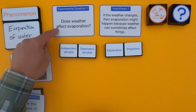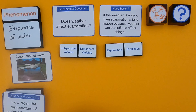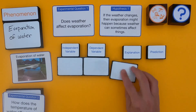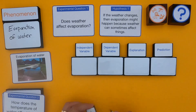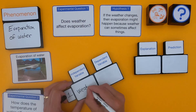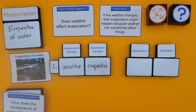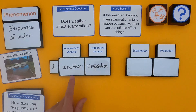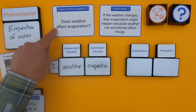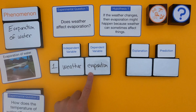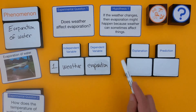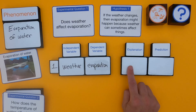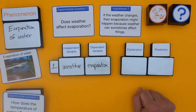The first thing I want to do with the question itself is: can I identify the independent and the dependent variable? As I look at their question — does weather affect evaporation — I can identify a clear independent variable. That's what's changing, just because of the word 'affect.' And then they're seeing how does that affect evaporation? The next thing is to look at their hypothesis and identify: is there an explanation, and is there some kind of a prediction in there as well?